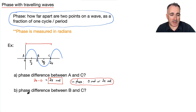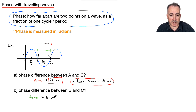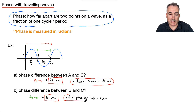Now, what's the phase difference between B and C? We're looking at the distance from B to C. C is at two pi and B is at pi, so the phase difference is two pi minus pi, which equals pi. The phase difference is pi radians — we can say they're out of phase by pi radians, or equivalently, out of phase by half a cycle.